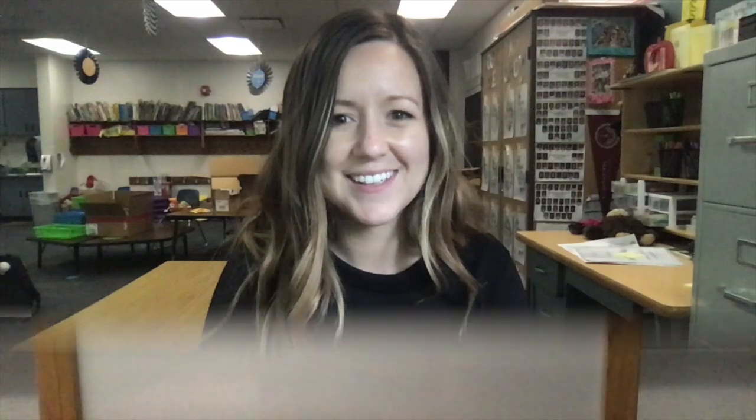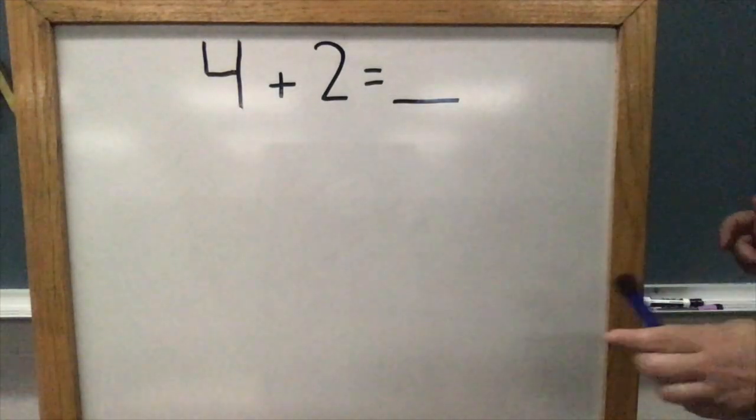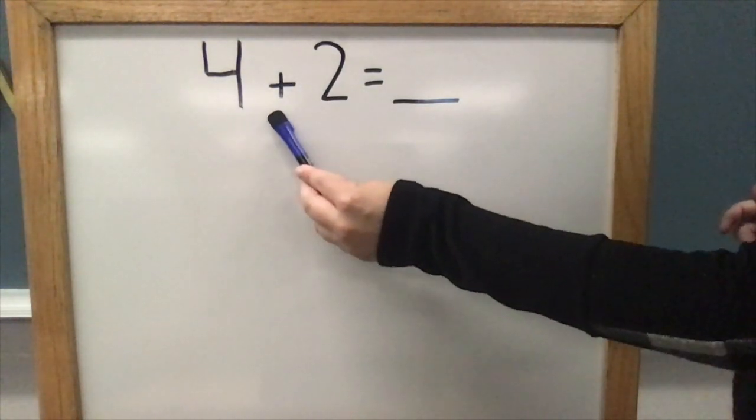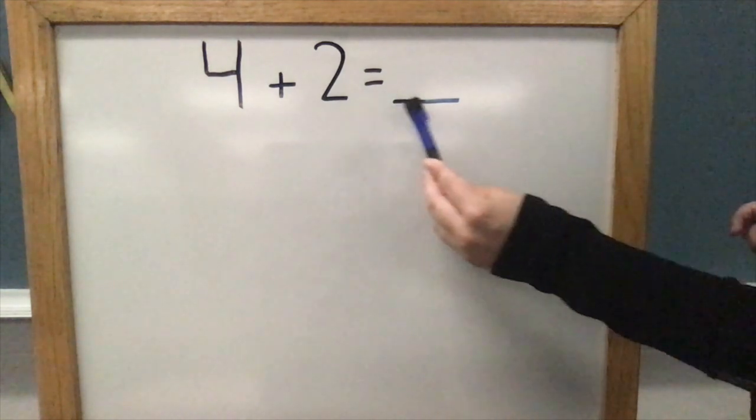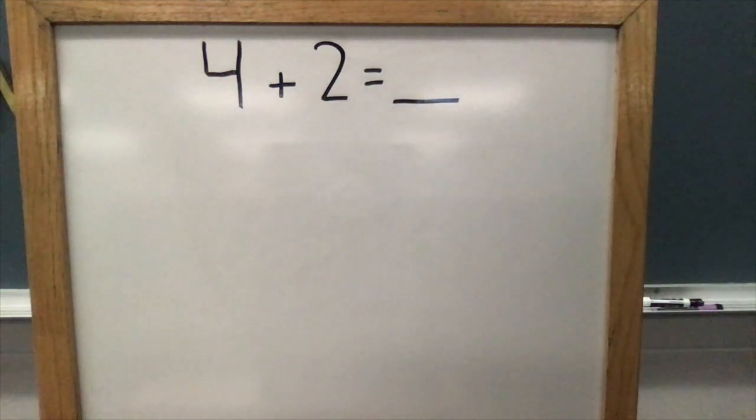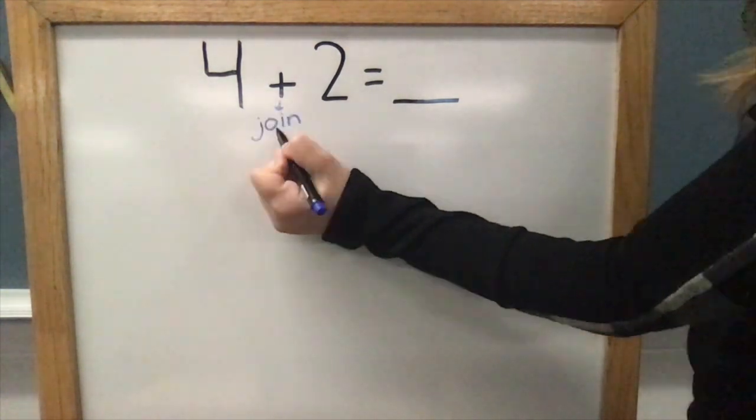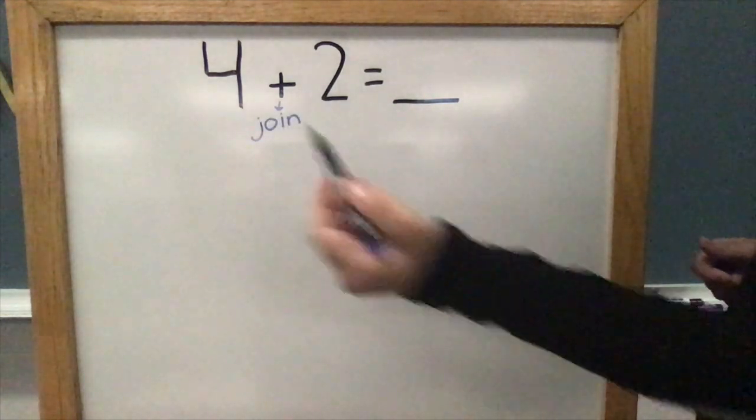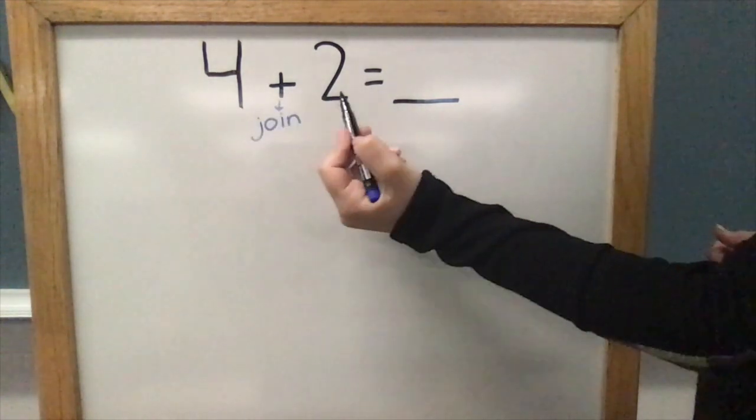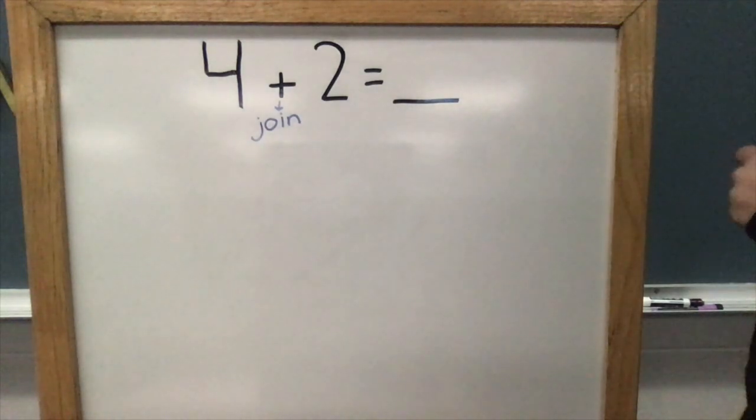Our first equation is four plus two equals. To solve this equation, we need to remember what the plus sign means. Remember, plus means join. That means I'm taking a group of four and joining it with a group of two.